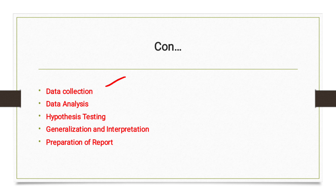Depending on whether the data is qualitative or quantitative, the method of data collection varies. The most common means for collecting quantitative data include structured interviews, surveys, telephone interviews, and secondary sources such as census records, vital registration records, official documents, and previous surveys. Qualitative data are collected mainly through in-depth interviews, focus group discussions, key informant interviews, and observational studies.